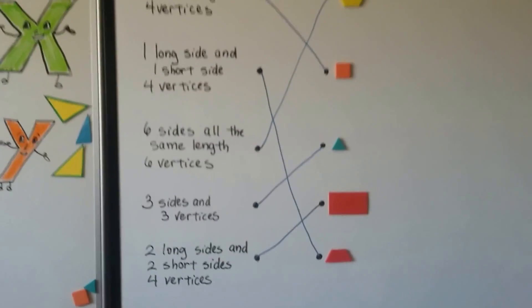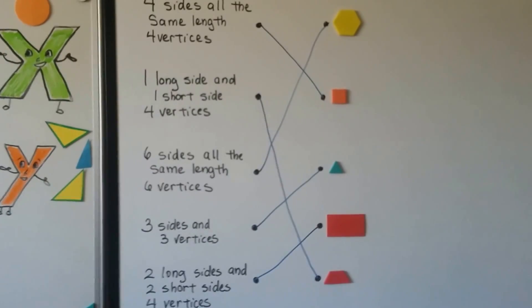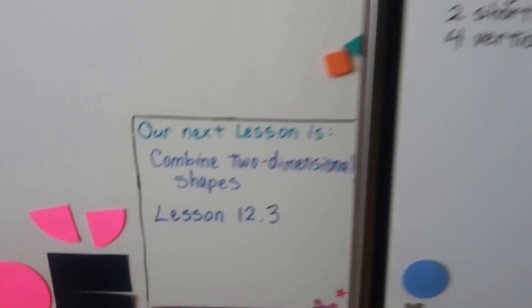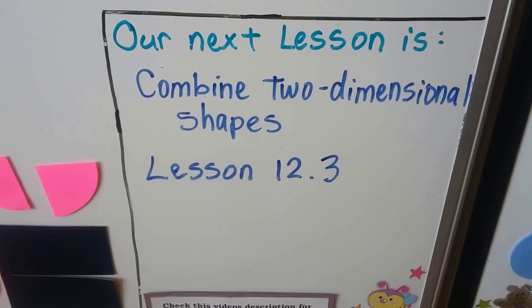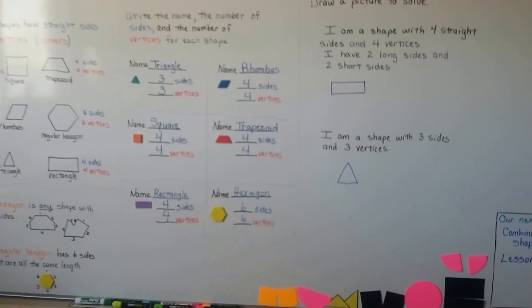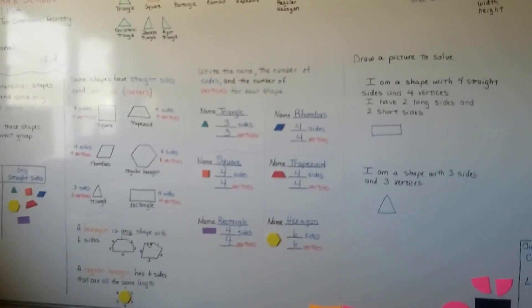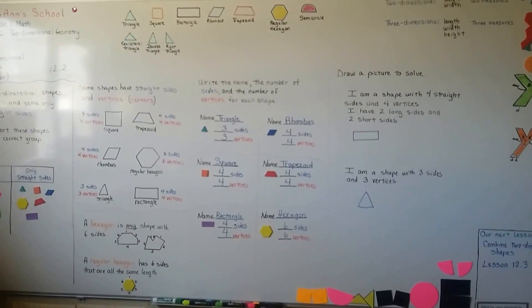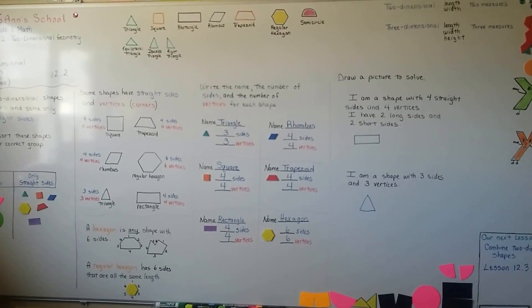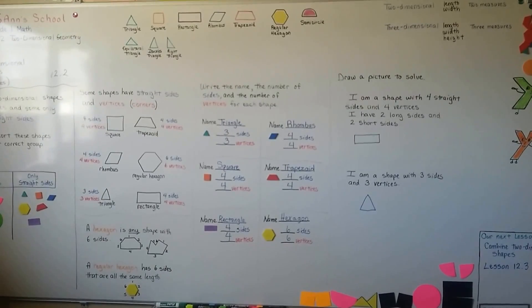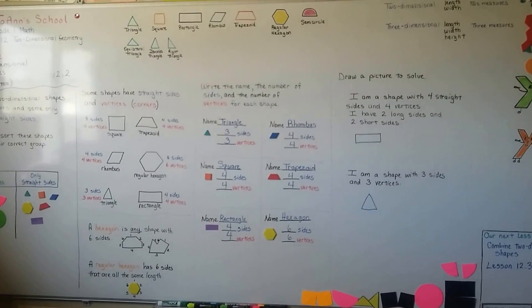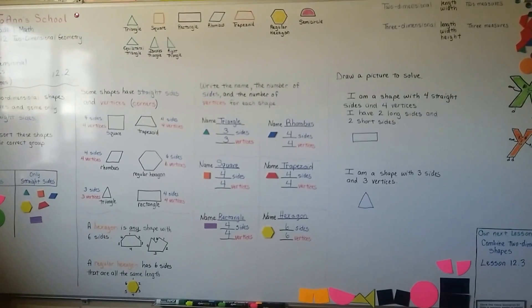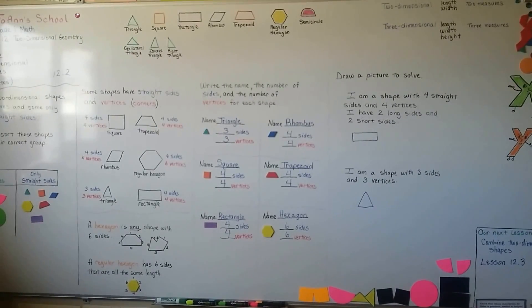We matched the shapes with their attributes. Our next lesson, we're going to combine two-dimensional shapes and make new shapes — that's lesson 12.3. You can get these colorful shapes from Learning Resources online, buy them on Amazon, or make your own from construction paper or poster board. Play with them and see if you can name them and count their vertices. I'll see you next video. Have a great day. Bye!